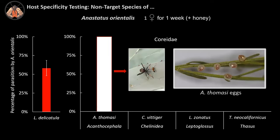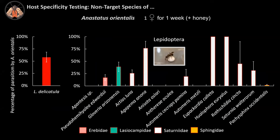We also tested Anastatus orientalis on eggs of one of the biggest Coreidae in the U.S., the giant water bug or Arcantherus palatomasi — as you can see these beautiful eggs. We obtained the largest parasitoid females from this host because this host is really big. Finally, the most negative news: Anastatus orientalis can parasitize up to four different families in the order Lepidoptera — Erebidae, Lasiocampidae, Saturniidae, and Sphingidae — though Sphingidae at very low levels.